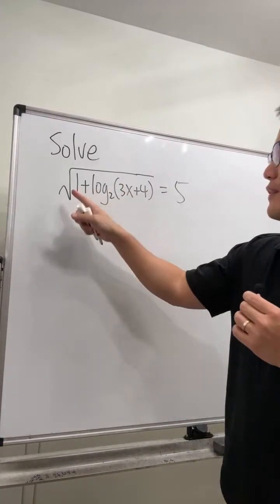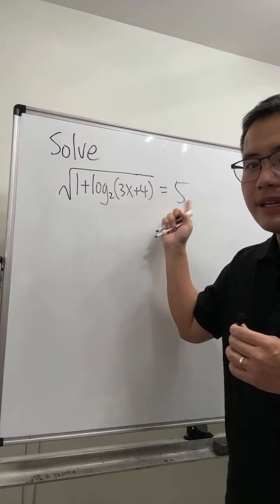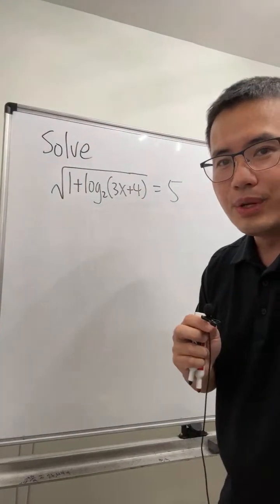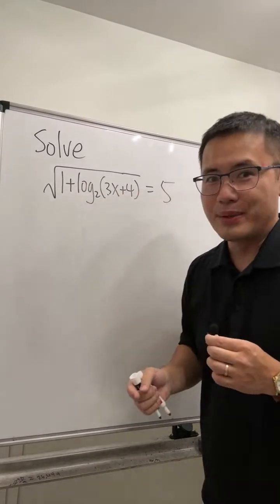Let's solve the square root of 1 plus log base 2 of 3x plus 4, and that's equal to 5. As you know, we have one, two, three, four, five in my equation.